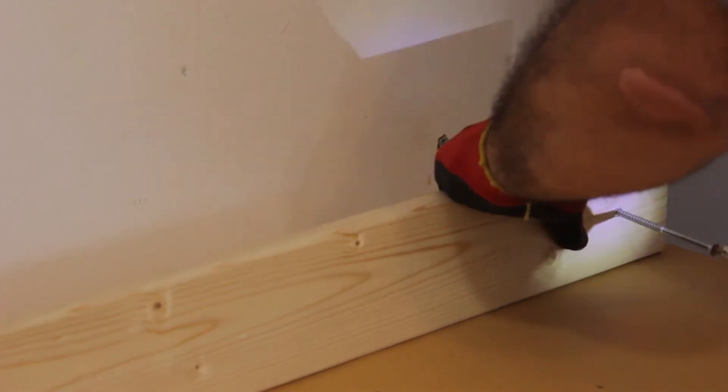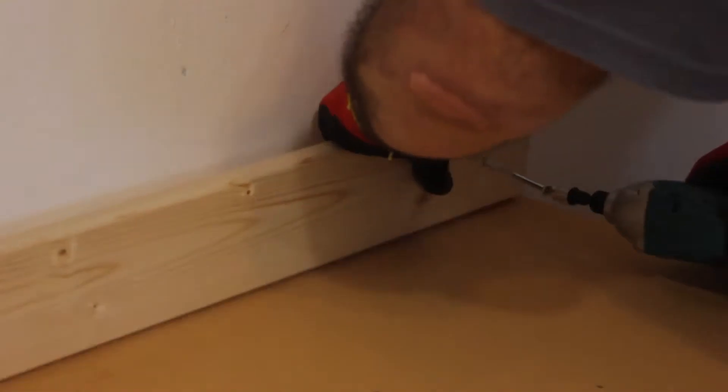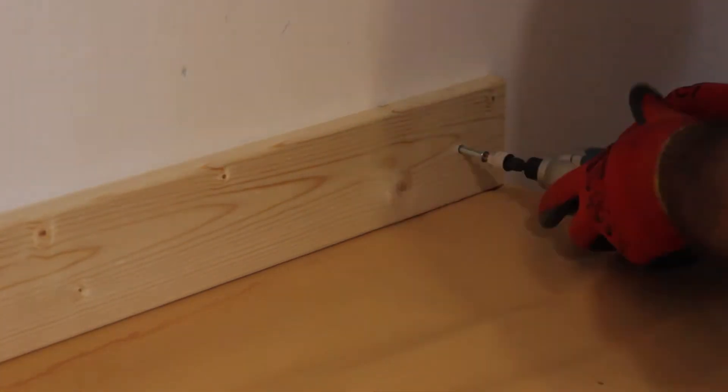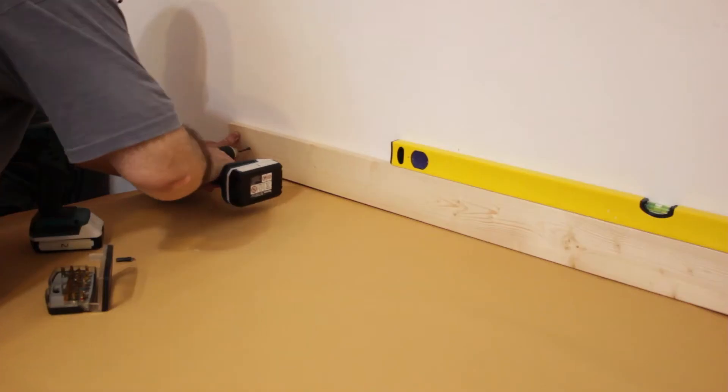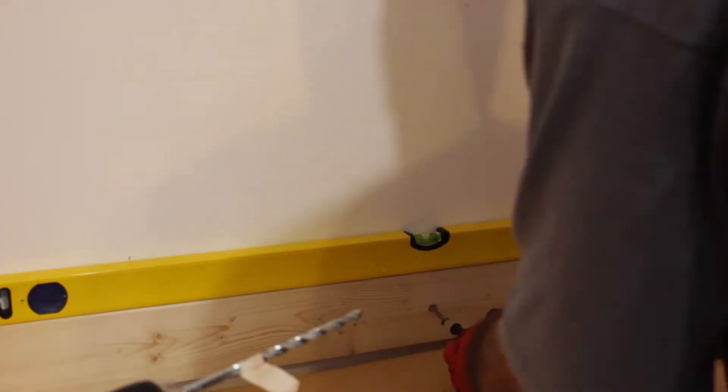I first drilled some holes into the wall and inserted some masonry anchors. The wood plank was then screwed firmly to the wall and checked for levelness.